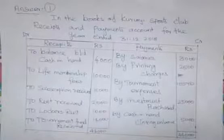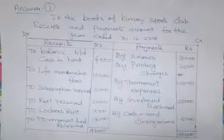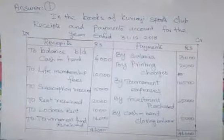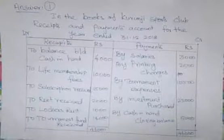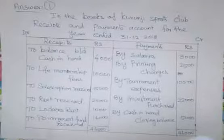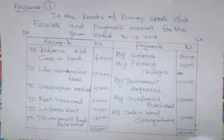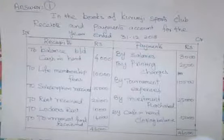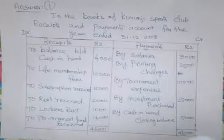Now, Receipts and Payments Account. Debit side is the receipt side; credit side is the payment side. In this problem, in the books of Kurangi Sports Club, Receipts and Payments Account for the year ended 31st December 2018. Left hand side is receipts — debit side; right hand side is credit side. To opening cash in hand — opening balance given in the problem: Rs. 4,000.